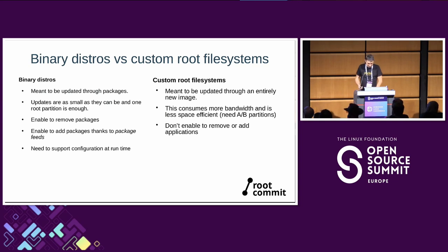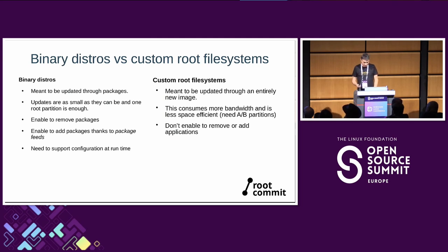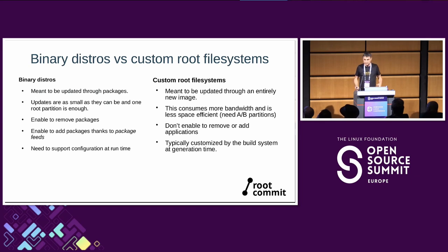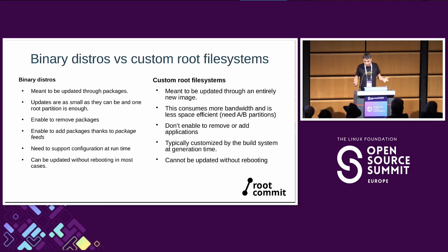With binary distros you can remove packages and add them as well, thanks to package feeds like in desktop distros. You can't really do that with custom distros generated as an entire partition — that's not meant to be modified; you just generate a new image. Binary distros can also be configured at runtime by editing configuration files, whereas generated root file systems are typically customized at build time. And binary distros can be updated without rebooting — though of course it's very complicated not to reboot when updating an entire image.